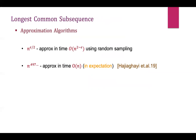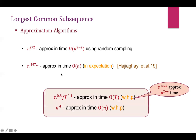On the approximation side, a simple algorithm using random sampling achieves n to the power epsilon over 2 approximation in time n to the power 2 minus epsilon. Setting epsilon to 1 gives a square root n approximation in linear time. Very recently in 2019, another algorithm broke this barrier, providing n to the power 0.497 approximation in linear time.